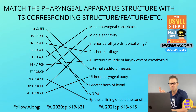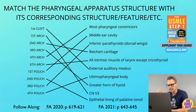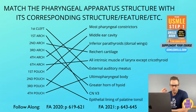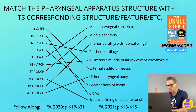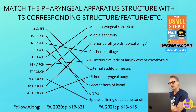The muscles of mastication include the anterior belly of digastric, the mylohyoid, the tensor veli palatini, and the tensor tympani. The first arch also supplies sensation to the skin of the face, the lining of the nose and mouth, and general sensations to the anterior two-thirds of the tongue.